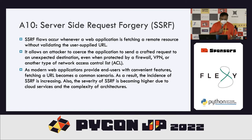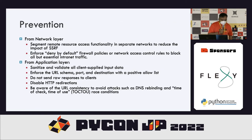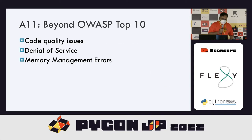The last OWASP 2021 category is server-side request forgery (SSRF), another new category. Whenever a web application fetches a remote resource without validating the user-supplied URL, it allows an attacker to coerce the application into sending crafted requests to unexpected destinations, even when protected by a firewall. Prevention operates at two layers — network and application. At the application layer: sanitize and validate all client-supplied input data; do not send raw responses to clients; disable HTTP redirections. Beyond OWASP top 10, you also need to address code quality issues, denial of service, and memory management errors.